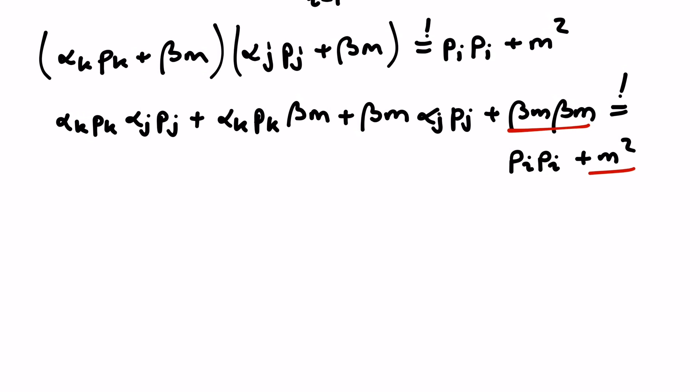Let's first look at the terms without any momentum. This means beta m beta m on the left and m squared on the right. Beta squared should be equal to 1, and we have our first condition.